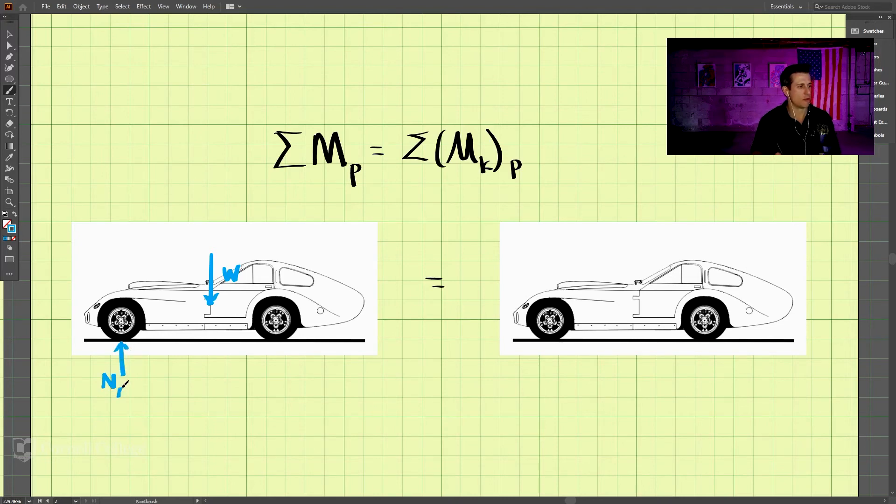and we can call this the normal force at A, and we can call this the normal force at B. And let's say this car's rear-wheel drive, so that means the tire's rotating this way, which means the frictional force FB will be here. The front wheel is not driven here. It just rolls, so there's no frictional force on the front wheel needed.